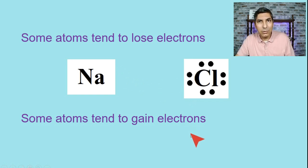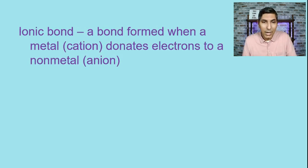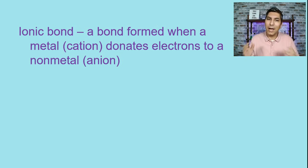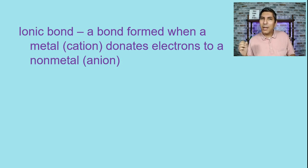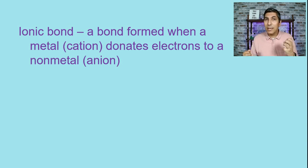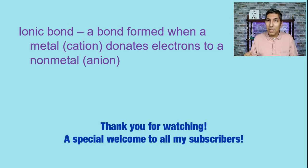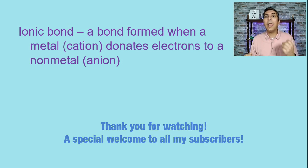Some atoms lose electrons and some atoms gain electrons, and when they get together they can help each other out. This is called an ionic bond. An ionic bond is a bond formed when a metal donates electrons to a non-metal, just like we saw — sodium, the metal, donated its electron to chlorine, the non-metal. When something loses electrons, it becomes positively charged — that's called a cation. And when something gains electrons, it becomes negatively charged — that's called an anion.